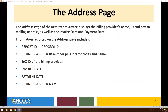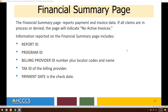On the address page of the remittance advice, this will display the billing provider's name, ID, and pay-to mailing address, as well as the invoice date and payment date. The financial summary page will report payment and invoice data. If all claims are in process or denied, the page will indicate no active invoices.